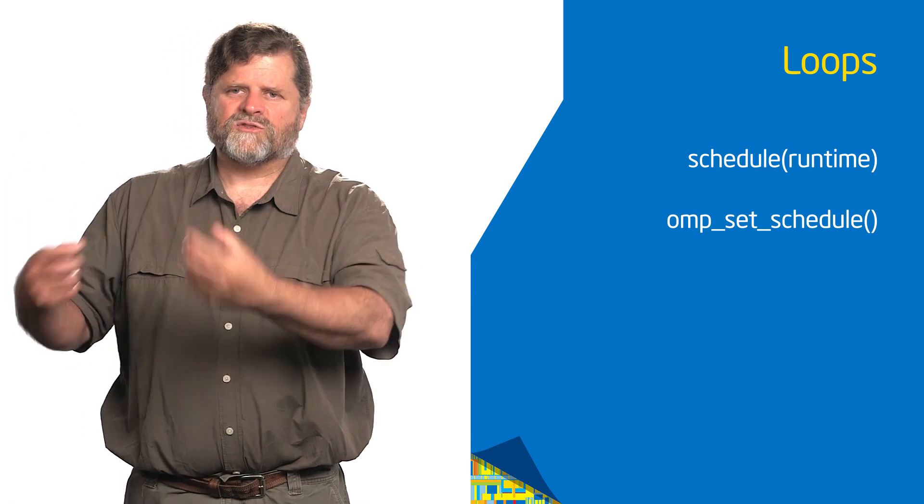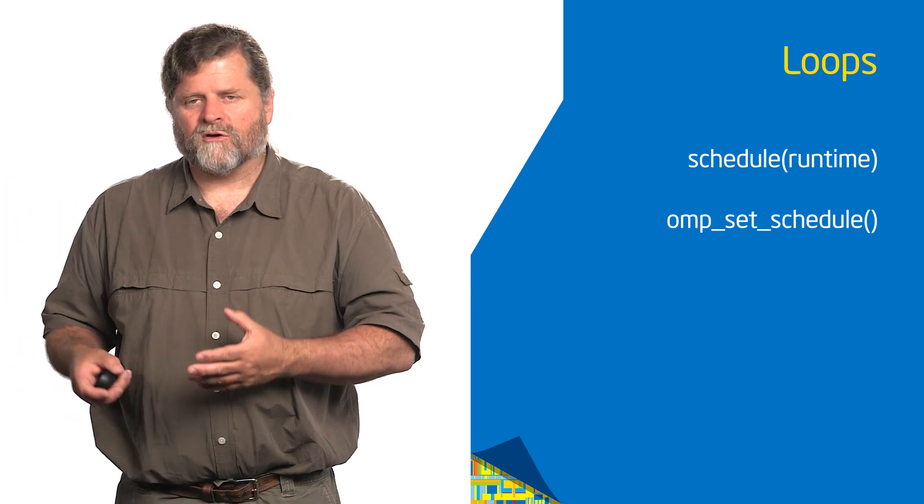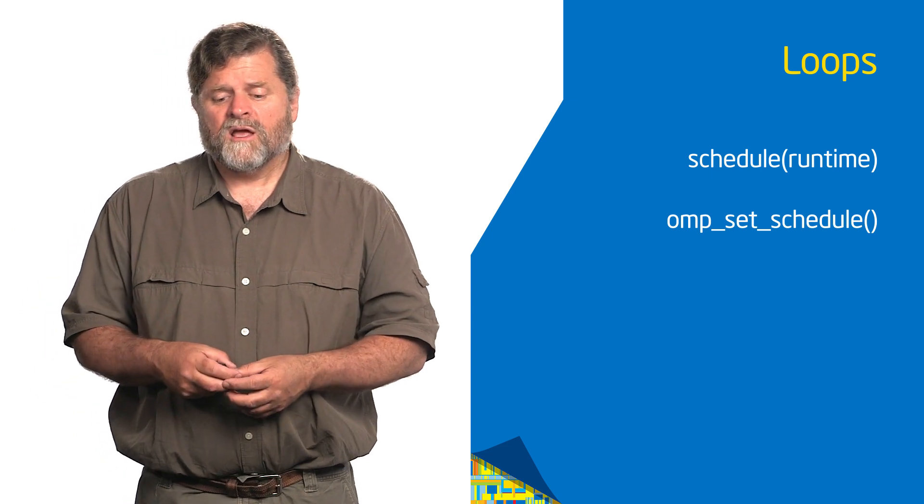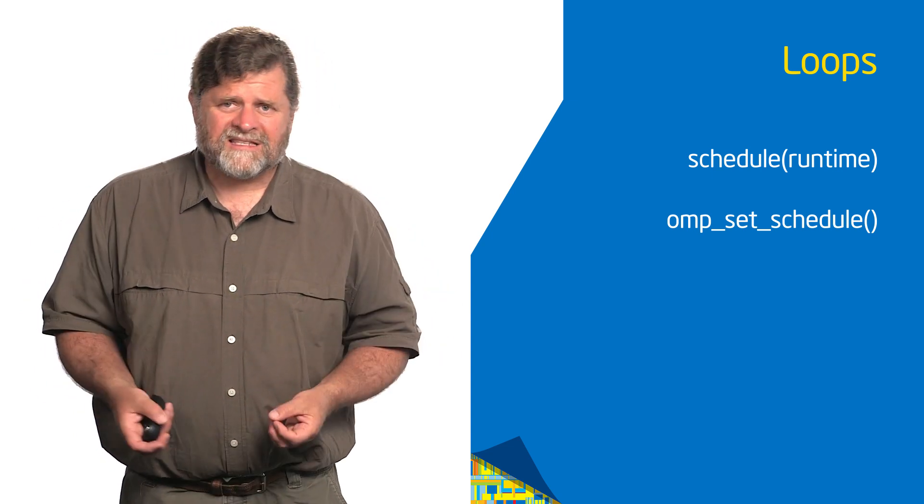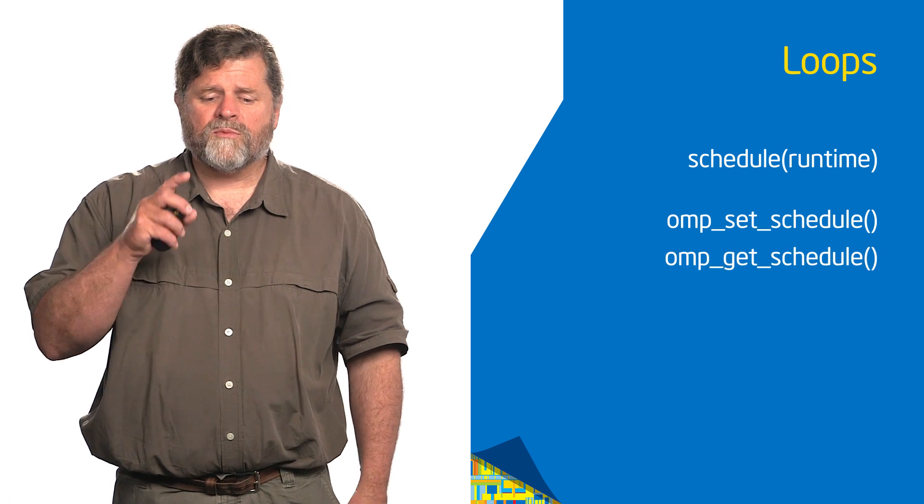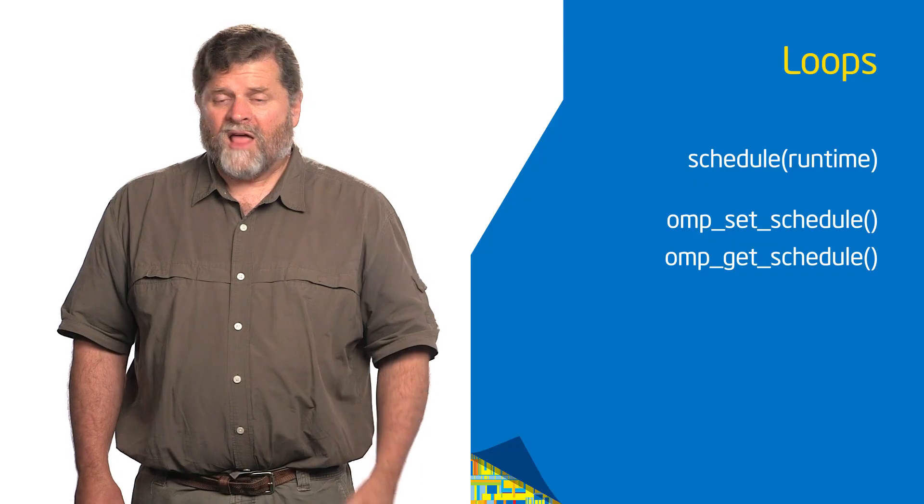And then the argument list pass it a string that says static or dynamic or whatever schedule you want. Or you can check and you can get the schedule to inquire. So, that would be OMP get schedule. So, these are something you can add and see and try without recompiling. You can just try different schedules in the same program.